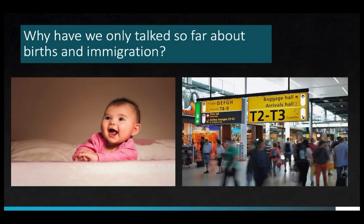Why is it that so far we've only mentioned births and immigration, and not deaths or emigration? There's actually a good reason that we focus on the input side of the population growth equation rather than the output side. Can you think of why? If you like, pause the video and consider the possible explanations for a minute or two.